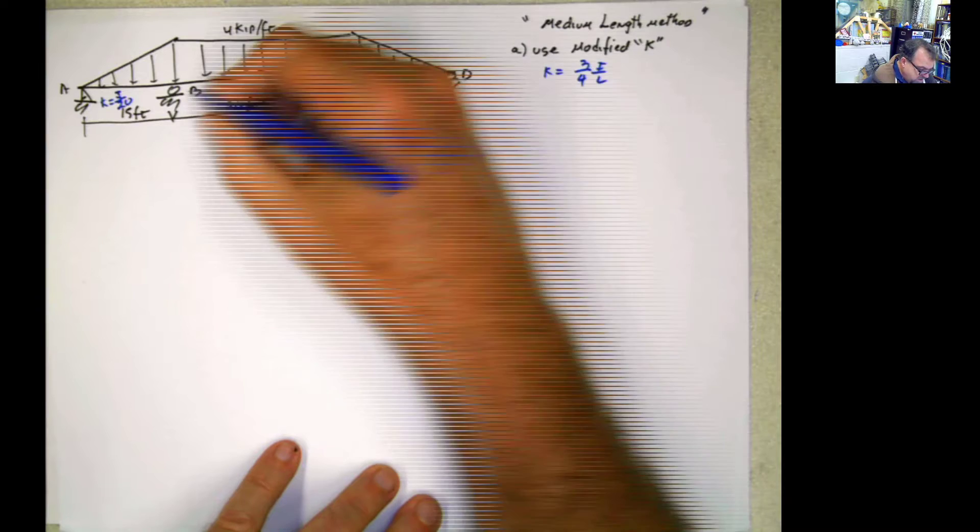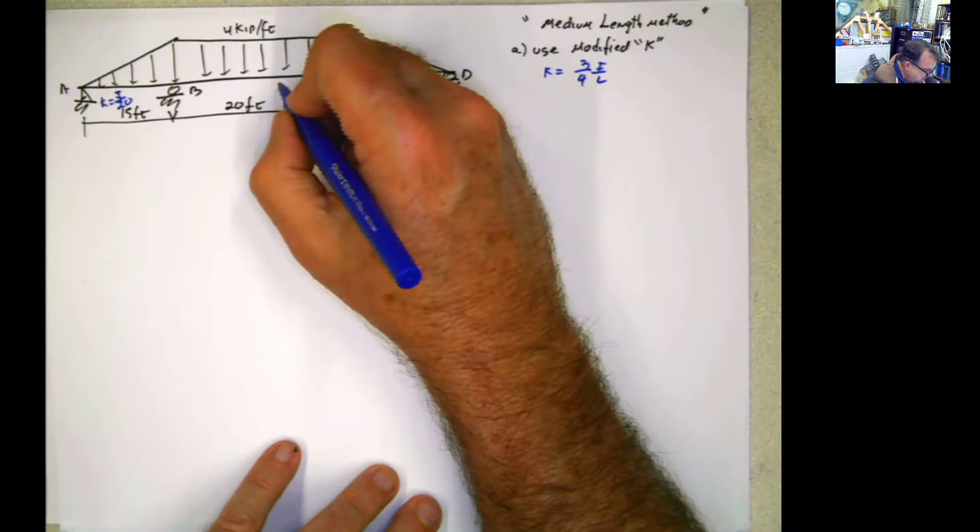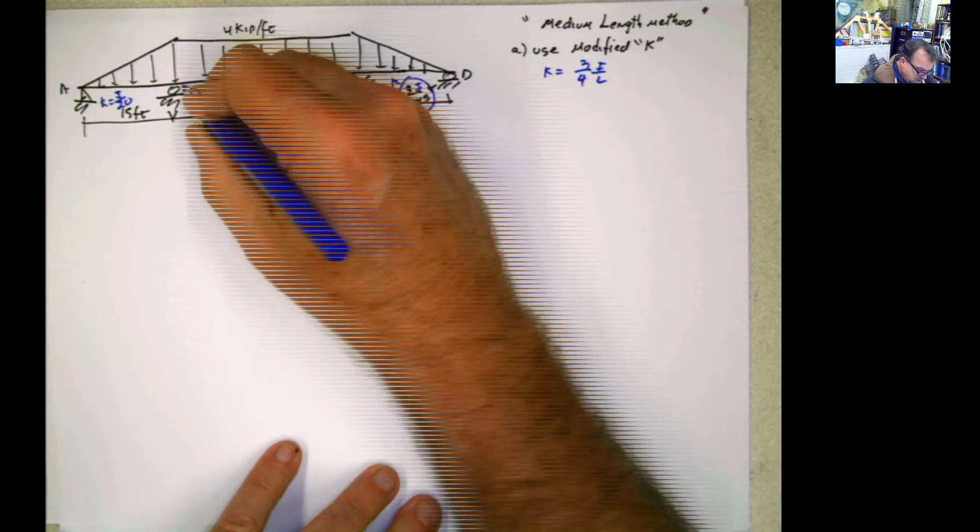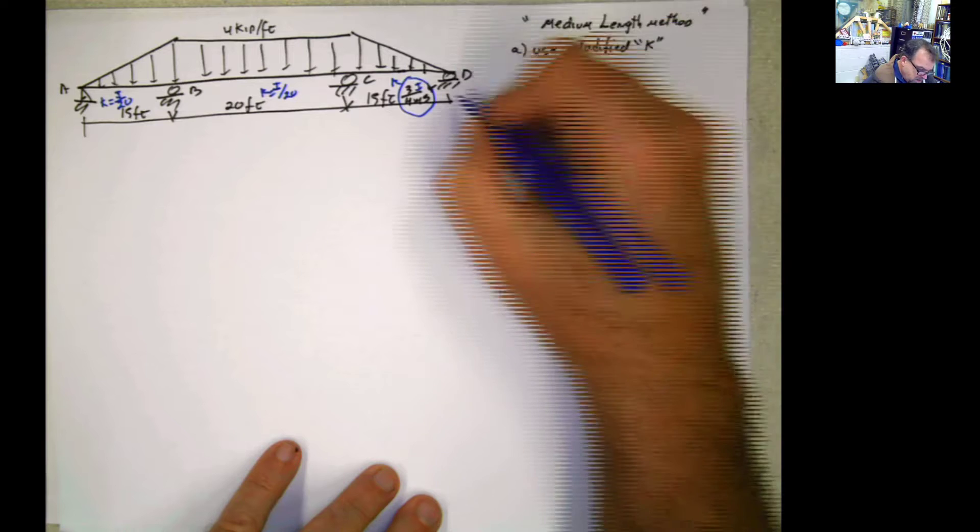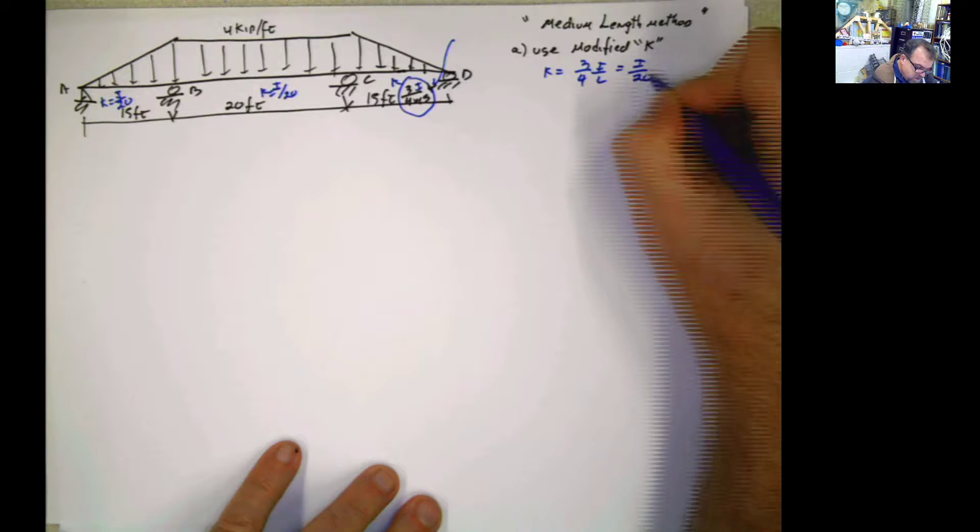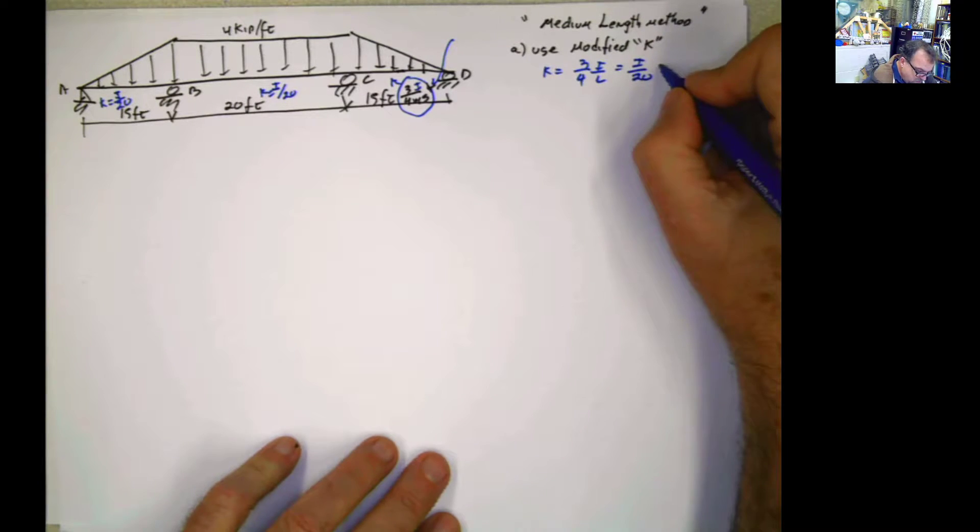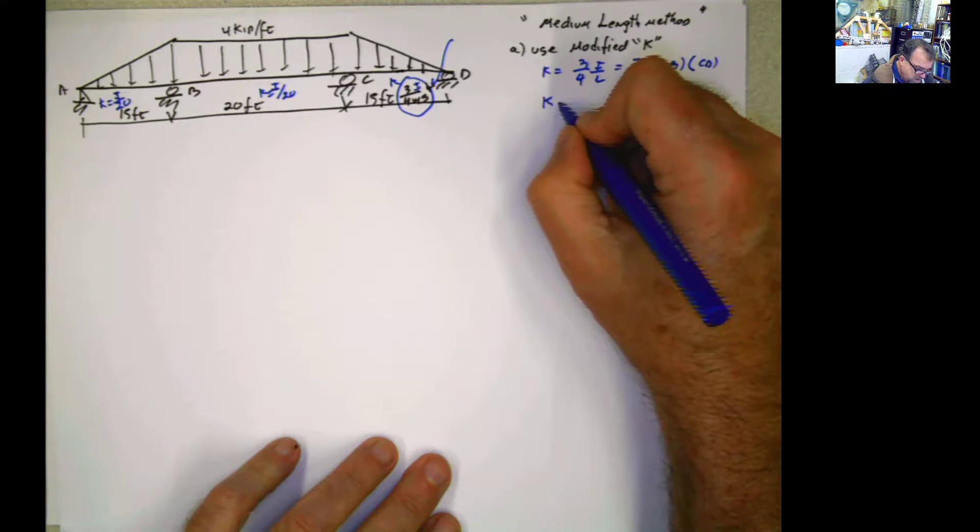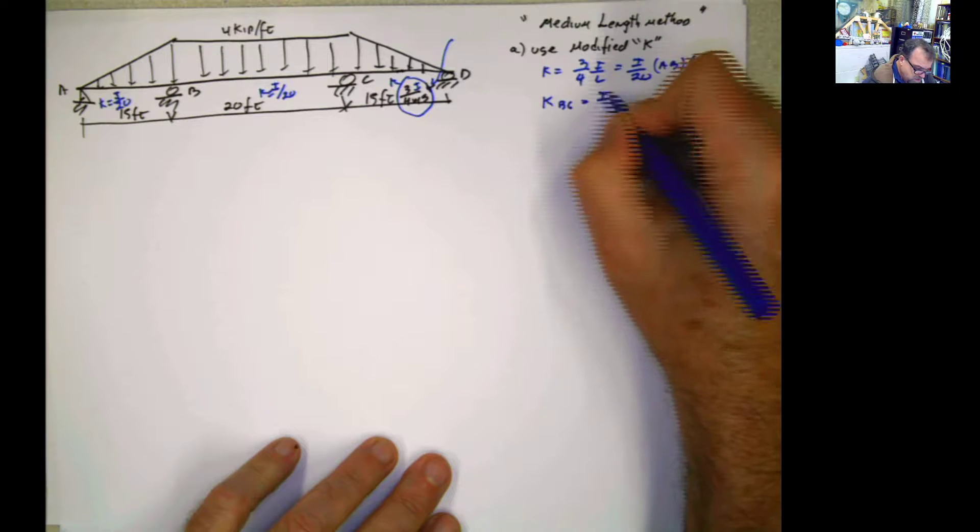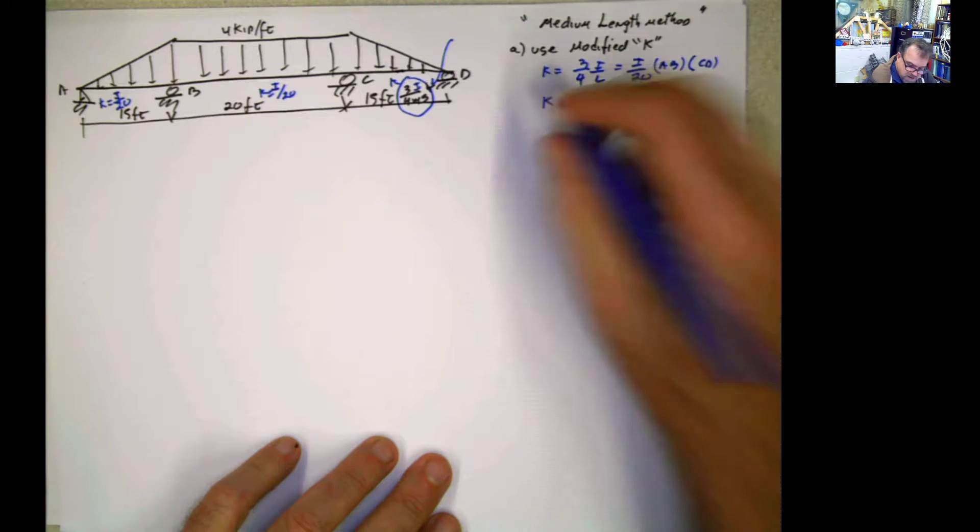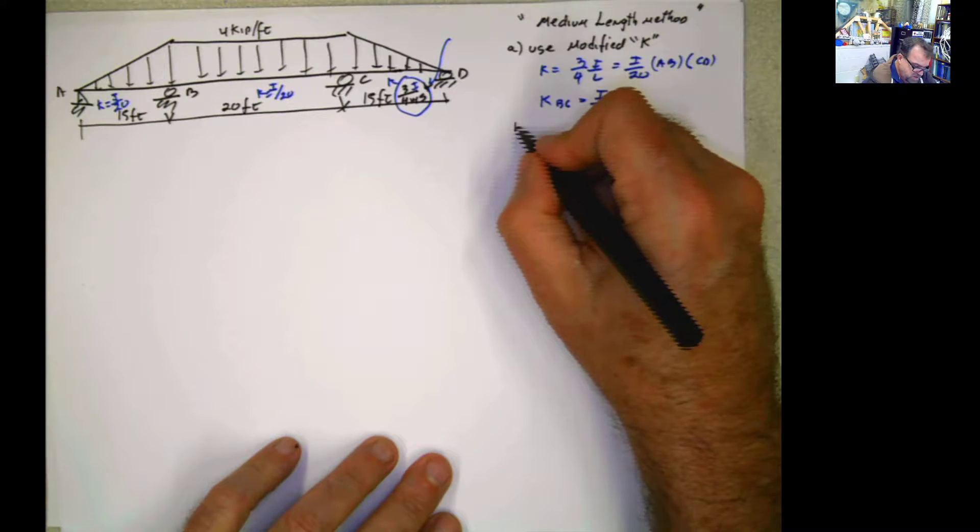And for this case, it's going to be just the regular i divided by 20 because it's i divided by l. And in this case, because of the modified factor, this is going to be remembered for AB and for CD. Now the k for BC is going to be just the regular i divided by 20. That's the first modification. The second modification here.